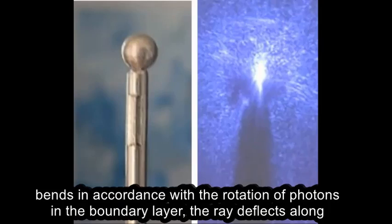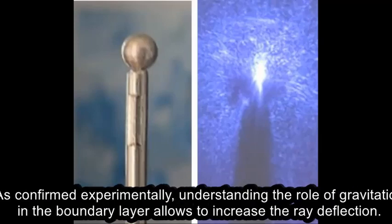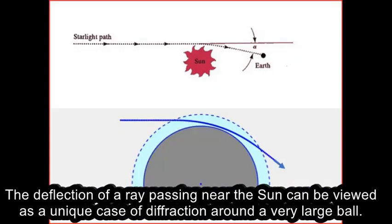the ray deflects along an arc parallel to the surface of the ball. As confirmed experimentally, understanding the role of gravitation in the boundary layer allows to increase the ray deflection. The deflection of a ray passing near the sun can be viewed as a unique case of diffraction around a very large ball.